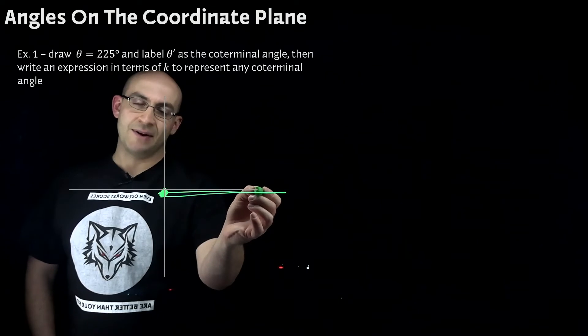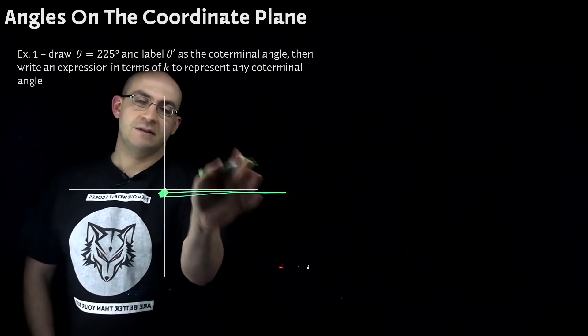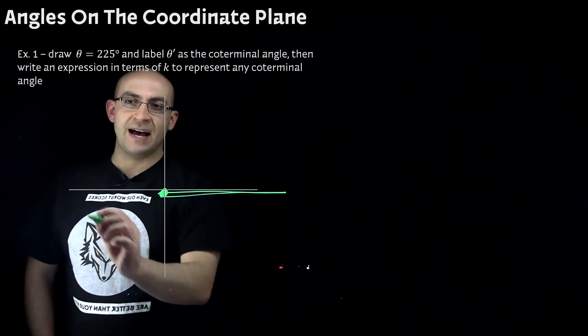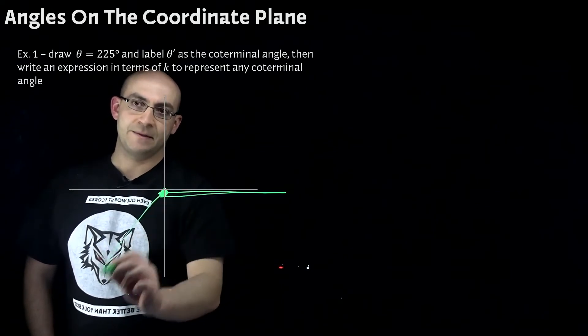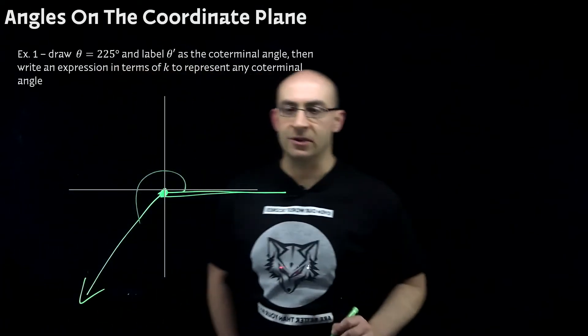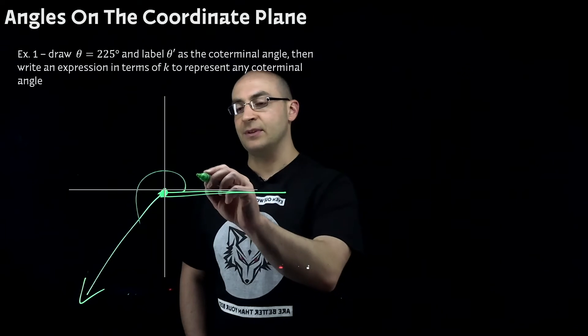So again, I'm going to eyeball this as best I can. 90 degrees, 180. So I need another 45. So it's going to be about here. That's not bad. So this is going to be our 225 degree angle. We would label this as theta.